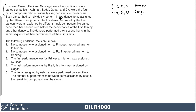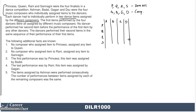Each dancer had to individually perform two dance items assigned by different composers. So immediately I'm noting that each dancer's two items must come from different composers. A tick-in-and-out grid might work well here. We have P, Q, R, S and A, B, G, D. Visually representing this should make things easy to handle — all of them need two different ticks. The first item performed by the four dancers were assigned by different music composers, which is good news.